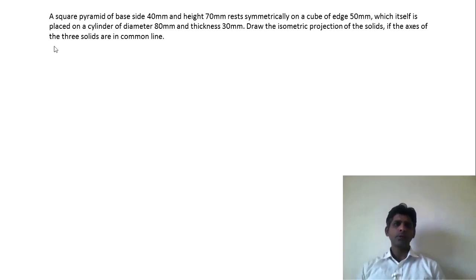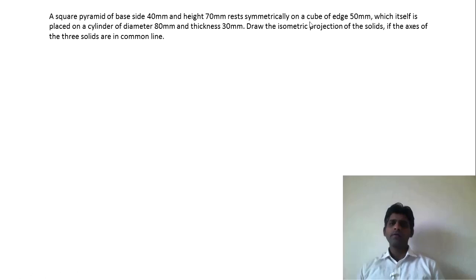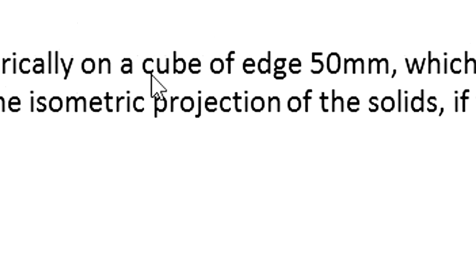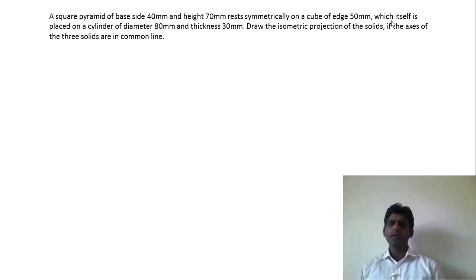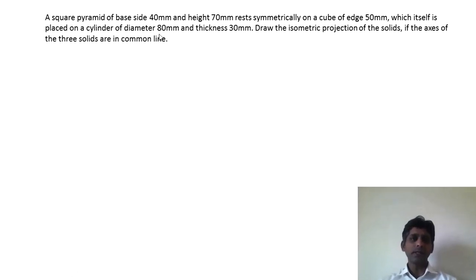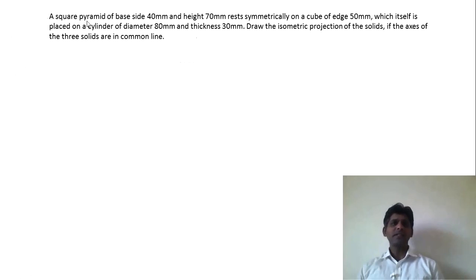Let me go through the problem. We have a square pyramid — the base side is 40 mm and height is 70 mm. Then we have a cube, where all edges are equal to 50 mm, which is placed on a cylinder of diameter 80 mm and thickness 30 mm. So we see that we have 3 solids: a square pyramid, a cube, and a cylinder, and the dimensions of all are given to us.